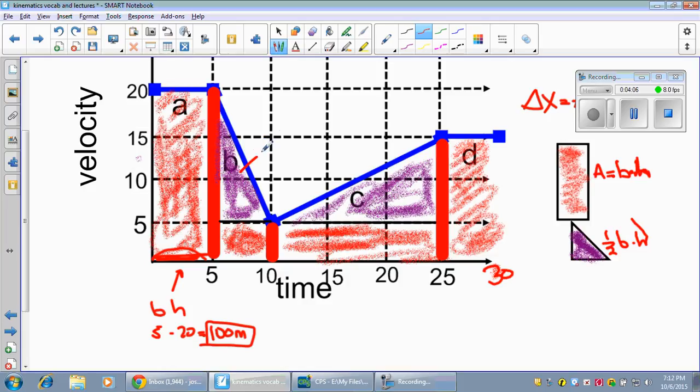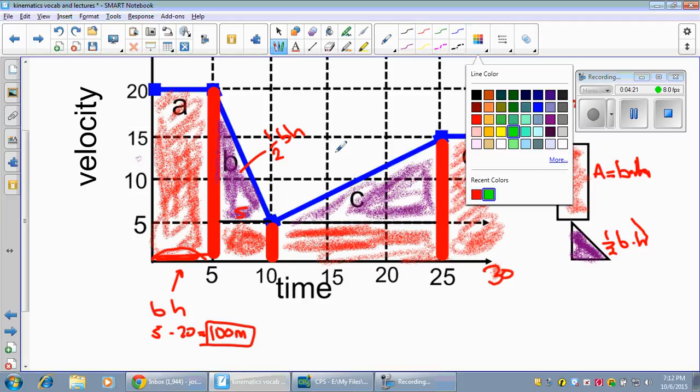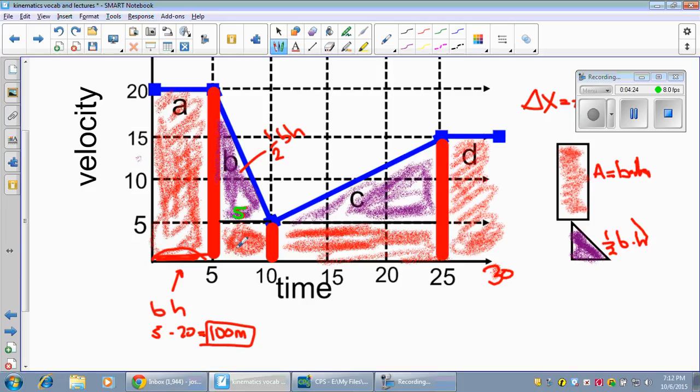Right here, I'm going to work this out up here. So I have one half base times height because it's a triangle, right? So the base is five. I'm going to use a different color here so you can see better. And of course, since this base is five, this base is also five. The height is going to be five, ten, fifteen. Five times fifteen is going to get you seventy-five. I'm going to divide that by two because it's one half. Seventy-five divided by two, any handy dandy calculators in case you don't know. So I'm going to get thirty-seven point five. Thirty-seven point five meters.